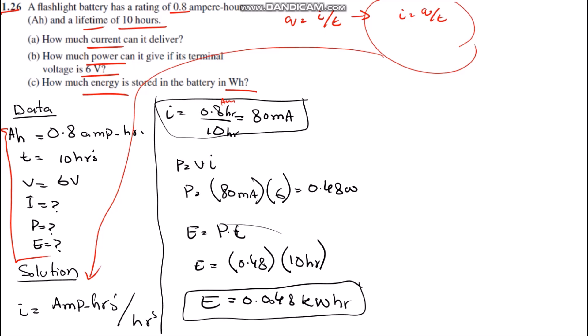It means the battery can deliver only 80 milliamperes. And in order to find the power, we know the equation of power, which is P equals VI. Therefore we simply multiplied the current with the terminal voltage, which is 6. Therefore we get 0.48 watts.